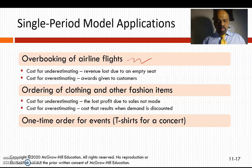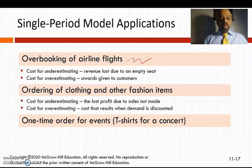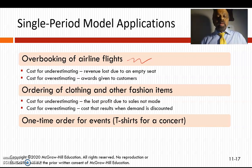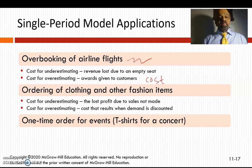Airline companies overbook their flights. The reason for overbooking is that if some people are not coming, they would have at least somebody else coming so they won't fly with fewer people. But there is also a problem because they can overestimate or underestimate. If they overestimate, they need to give awards to some customers, and that is a cost — the cost of overestimating.